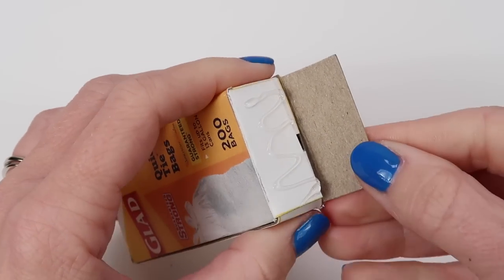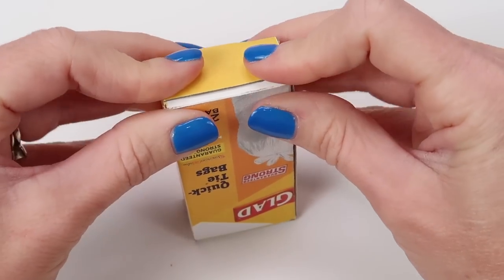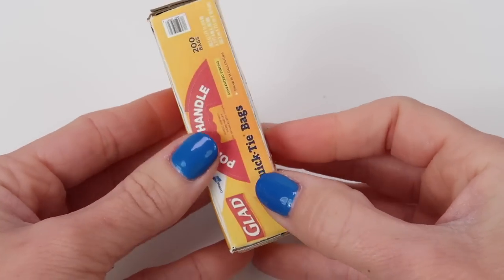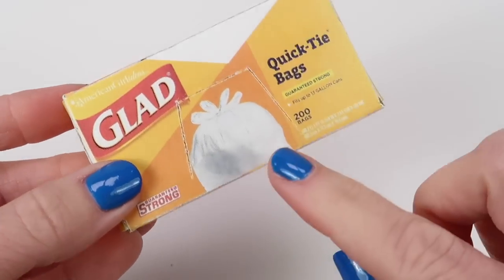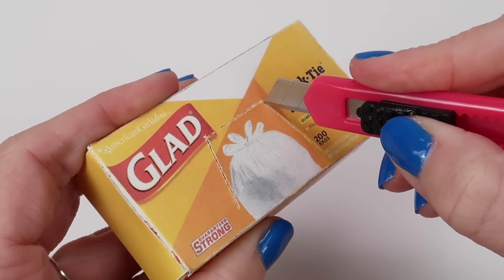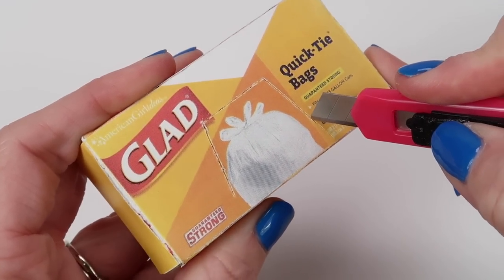Now with these trash bag boxes, there is a spot on the front of the box for you to cut out a little hole so you can pull out all the trash bags. You can cut out this tab before you assemble the box, or you can use a box cutter afterwards and poke through once it's already together.